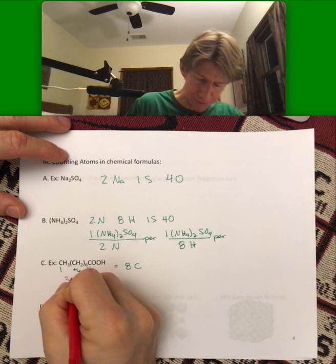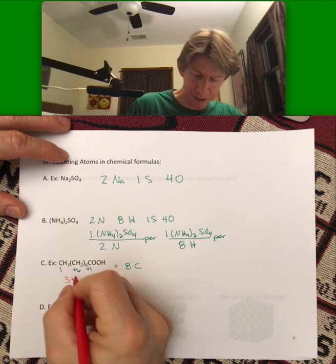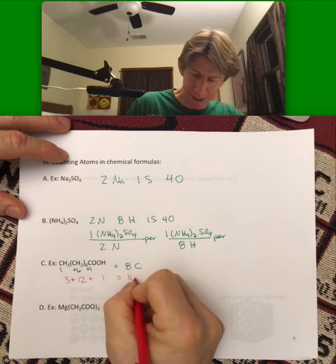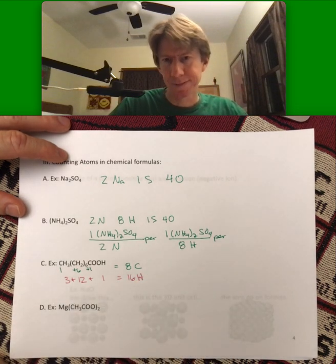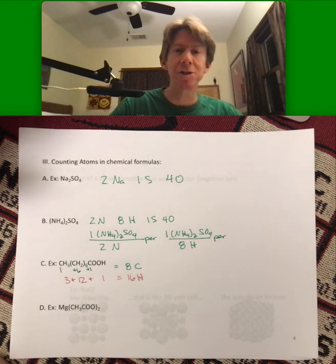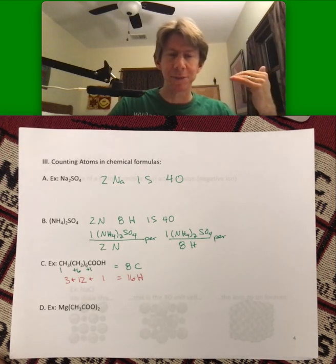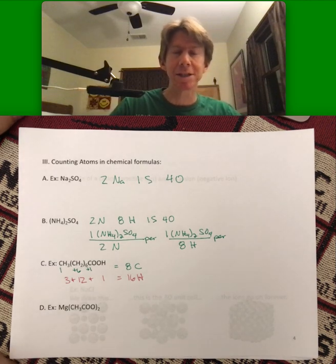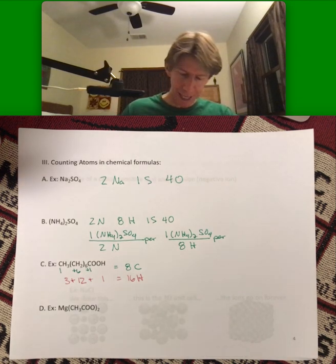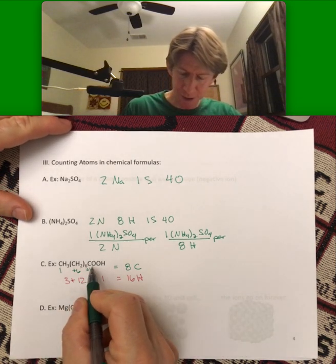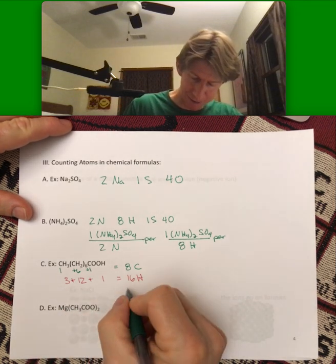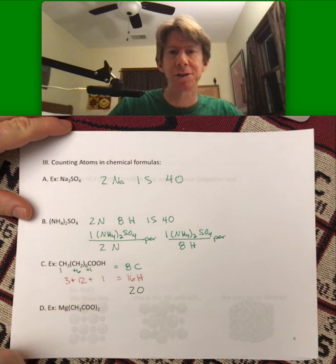Three plus two times six is twelve plus one is sixteen hydrogens. And however you keep track of them is fine, but you're going to be doing molar masses like we did before for increasingly complicated things. And we just want to have a process for keeping track of things. And so fortunately the oxygens, neither of them are in the parentheses, so it's just two oxygens as well.